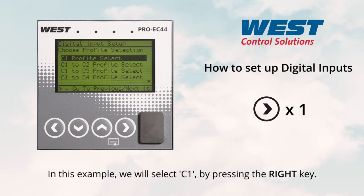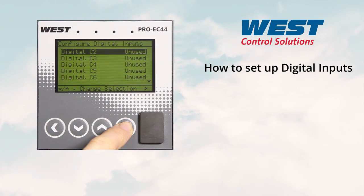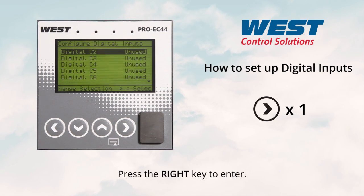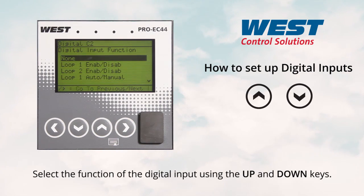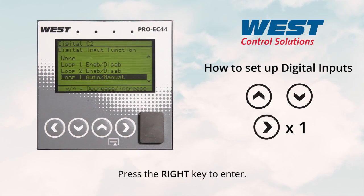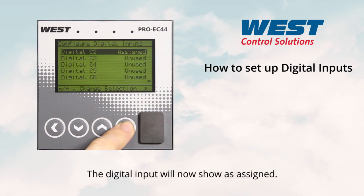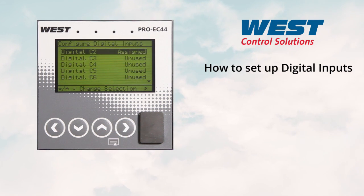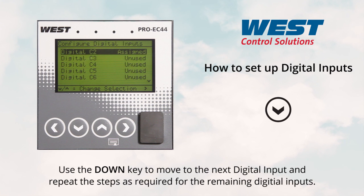In this example, we will select C1 by pressing the right key. Press the right key to enter. Select the function of the digital input using the up and down keys, then press the right key to enter. The digital input will now show as assigned. Use the down key to move to the next digital input and repeat the steps as required for the remaining digital inputs.